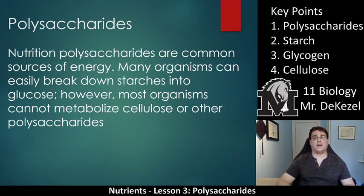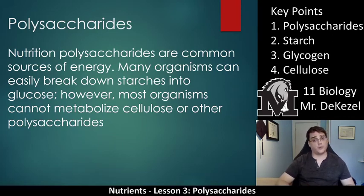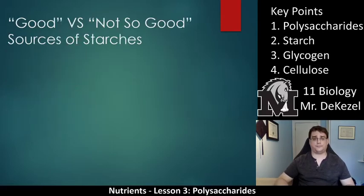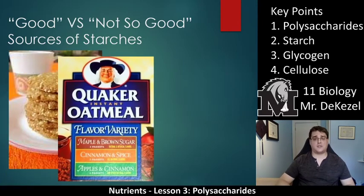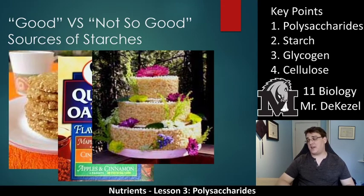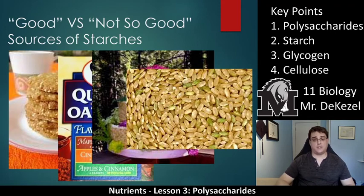In terms of nutrition, polysaccharides are a common source of energy. Many organisms can easily break down starches into glucose; however, most organisms cannot metabolize cellulose or other polysaccharides because they don't have the proper enzymes. What are some good versus not-so-good sources of starches and carbohydrates? Cookies might be okay depending on type, but if they've got sugar in them that would be a poor source. Quaker oats are a very good source, except if you add sugar like maple and brown sugar — plain oatmeal would be great. A fancy cake is probably not the best source, as it would be high in glucose and fast carbohydrates. Grain would definitely be a good source, as it is full of polysaccharides and takes a long time to break down.